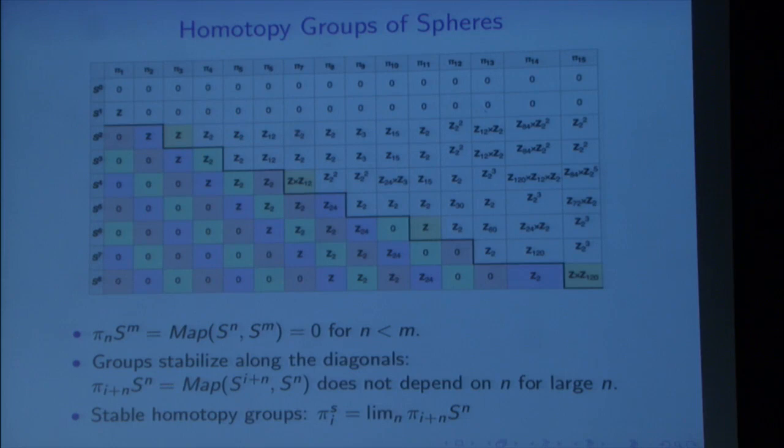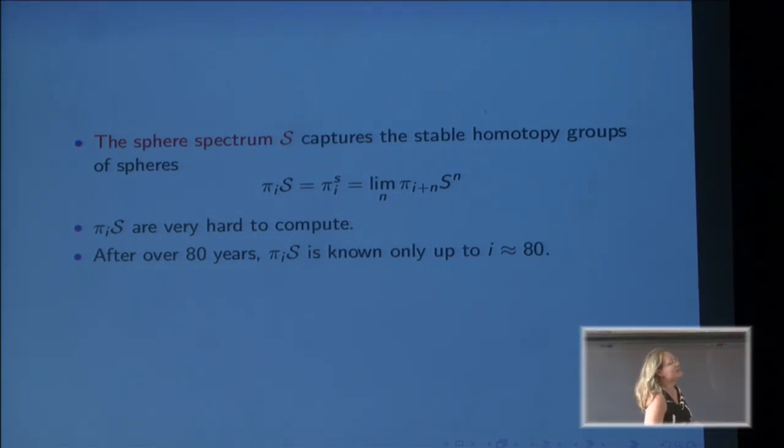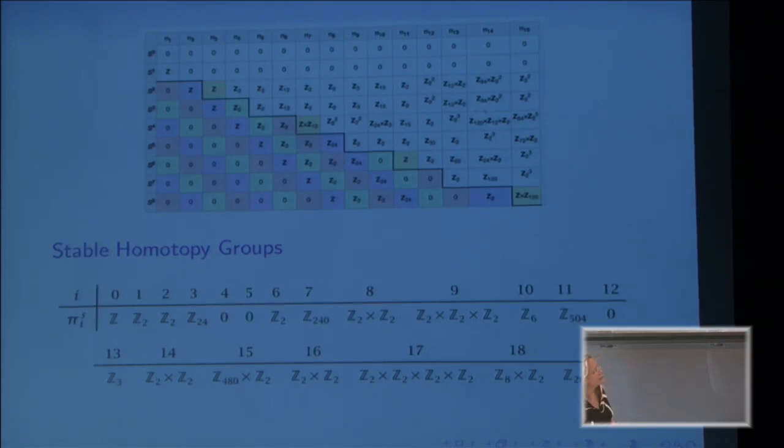We change our language a little bit. Since it no longer matters what sphere we're talking about, we stopped talking about spheres and start talking about spectra. A spectrum is a generalization of a topological space. In particular, the sphere spectrum S is a topological object which has homotopy groups. This curly S is the sphere spectrum—it has homotopy groups which are exactly the stable homotopy groups of spheres. No matter what you call them, they're incredibly hard to compute. After over 80 years, πᵢ of the sphere spectrum is known completely only for i ≤ 80.